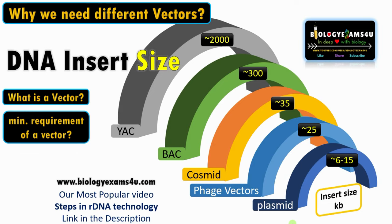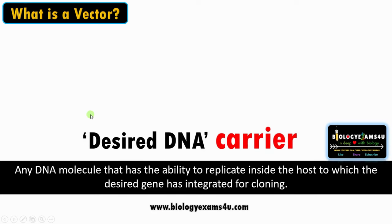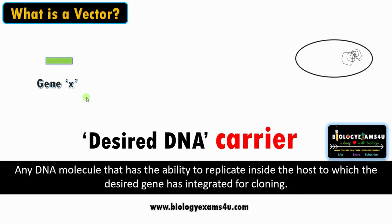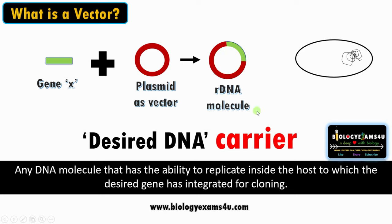A vector is a DNA molecule capable of replicating inside the host into which our desired gene is inserted for cloning — it is simply a desired DNA carrier. Suppose we have gene X and need to transform it into host bacteria; we need a carrier DNA molecule, which is the vector. We make a cut in the plasmid using restriction enzymes, join our desired gene into the vector using ligase, producing a recombinant DNA molecule that is transferred into the host organism.